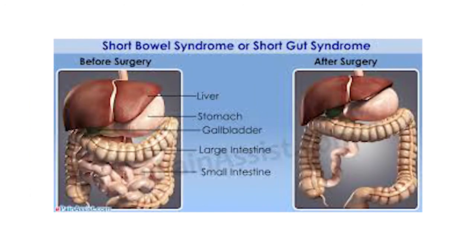You can see another picture: due to volvulus or intussusception or obstruction, the major part of the jejunum and ileum has been resected and anastomosis performed. Before surgery and after surgery images are shown on your screen.